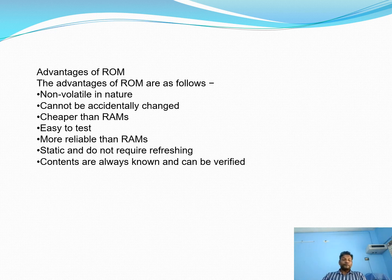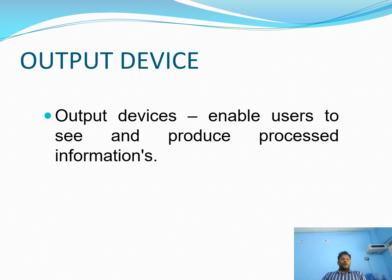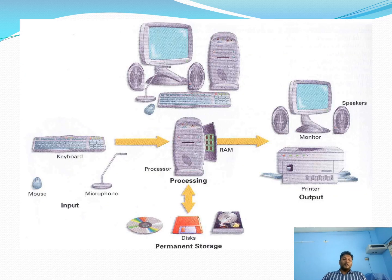Next we see some output devices related to memory. Output devices enable users to see and produce processed information by the computer. Examples include printer, scanner, display unit, and monitor. The slide shows output devices such as monitor, printer, RAM, microphone, keyboard (input device), and permanent storage disk devices.